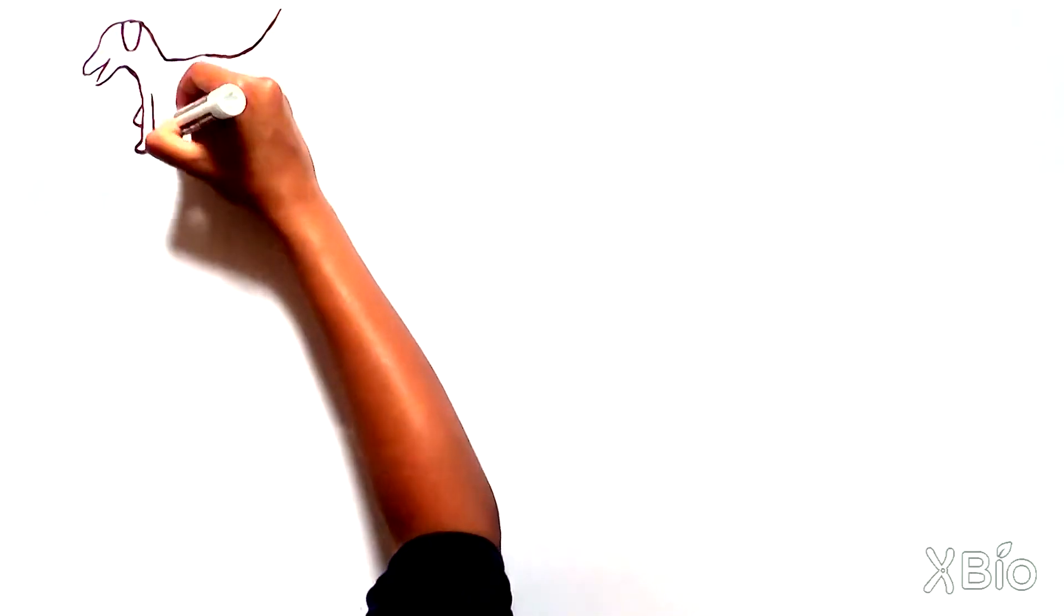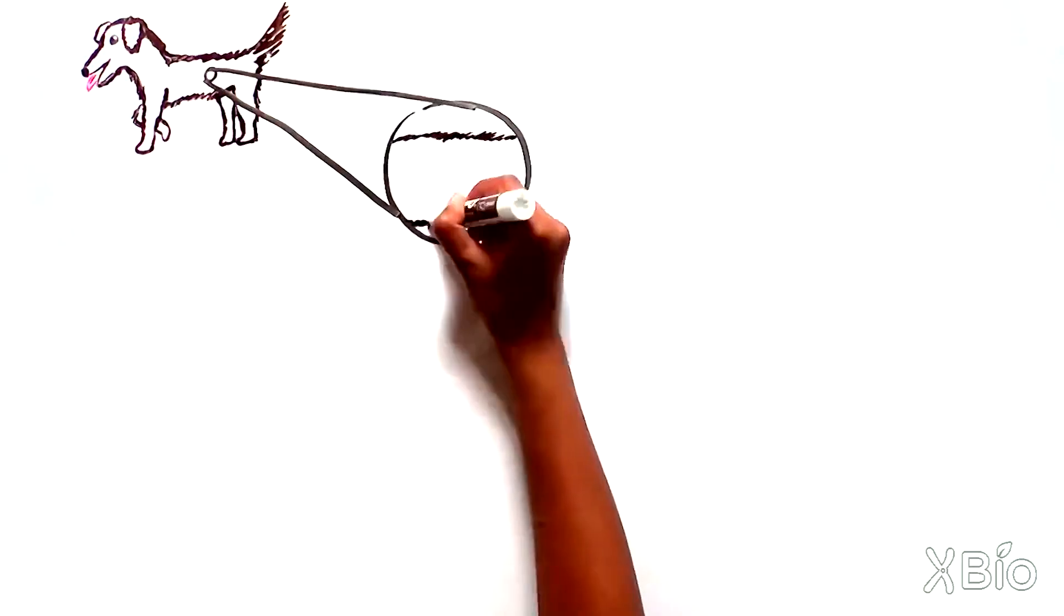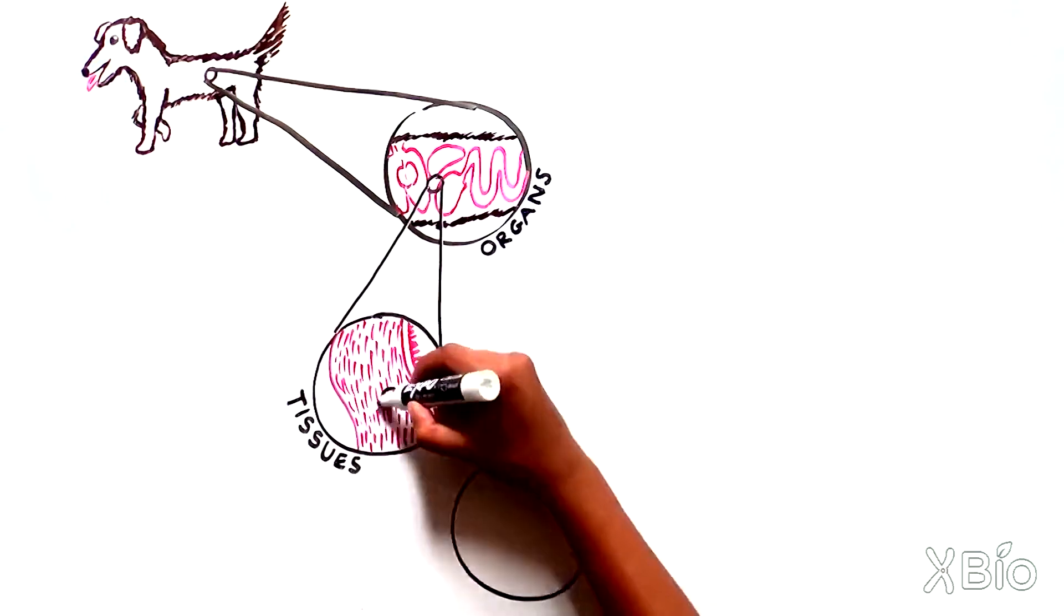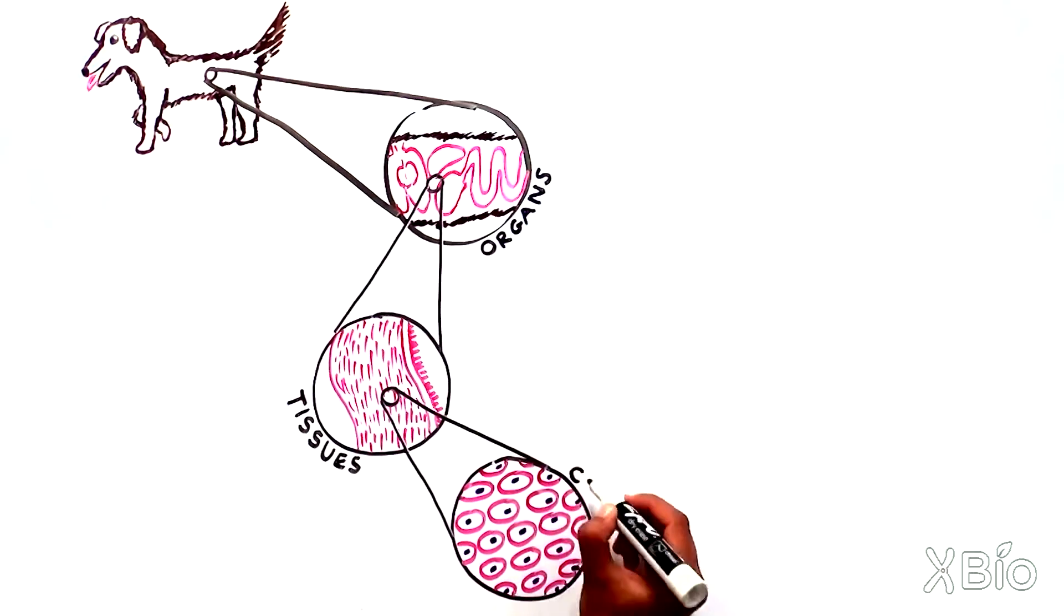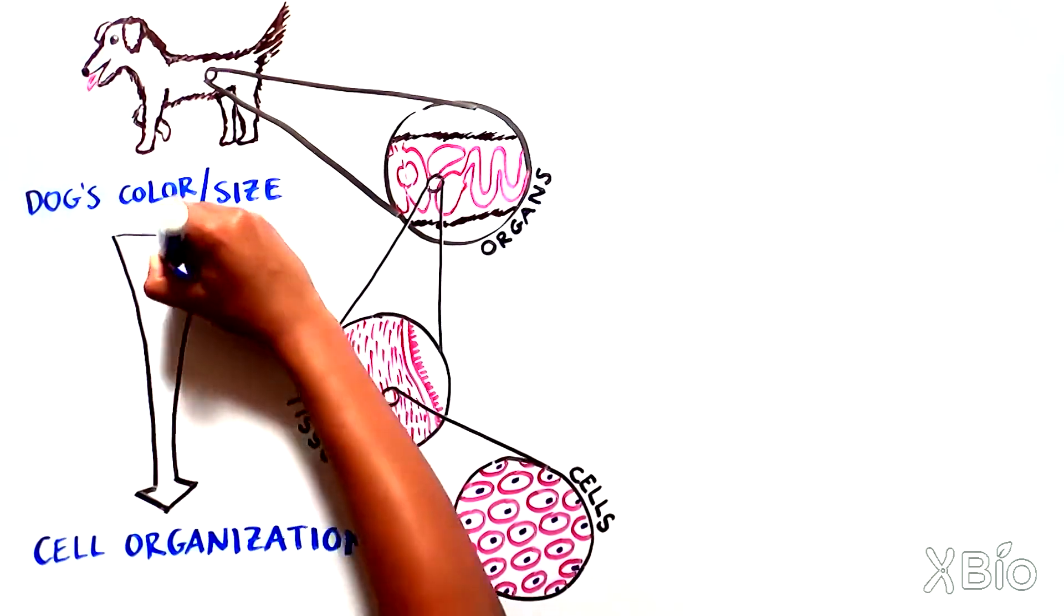You already know that the world of biology is very different if you look at something from far away, like the body of a dog, than if you look up close and see organs, tissues, and cells. Each different level of magnification reveals new features, from the dog's fur color and size to the way the cells are organized in its body.